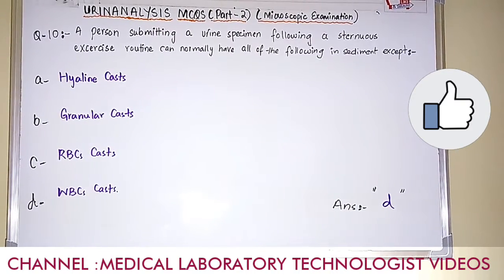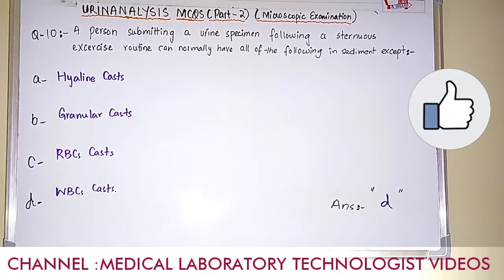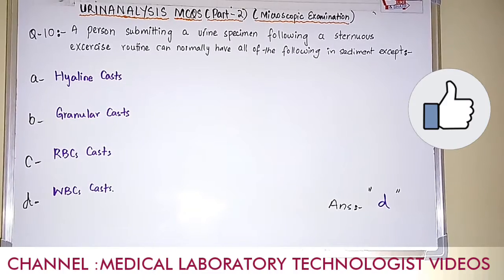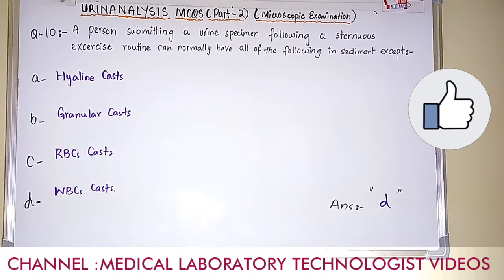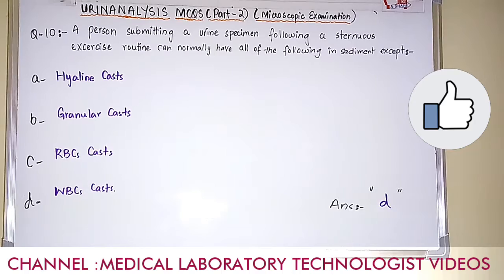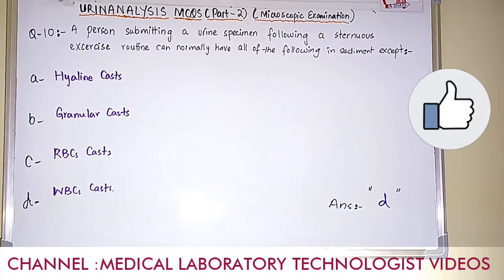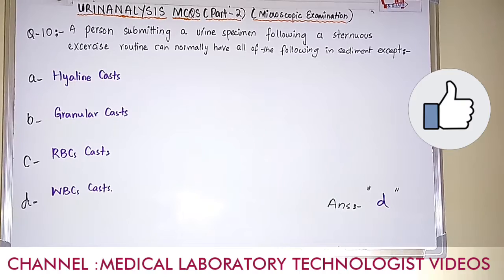Question number 10. A person submitting a urine specimen following a strenuous exercise routine can normally have all of the following in the sediment except. If a person routinely does heavy exercise and submits urine, all of the following may be found normally except one. Option A: hyaline cast. Option B: granular cast. Option C: RBC cast. Option D: WBC cast. The answer is option D, WBC cast. Hyaline cast, granular cast, and RBC cast can be found normally, but WBC cast will not be found in normal post-exercise urine.